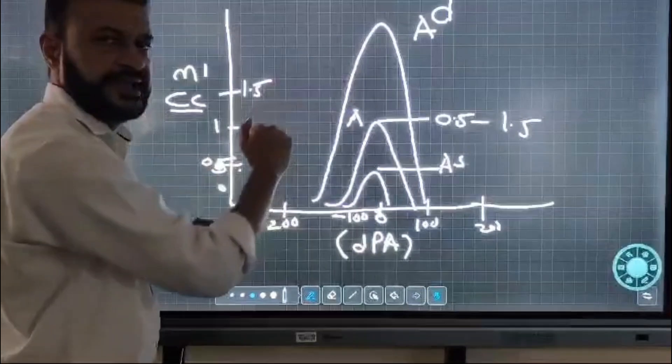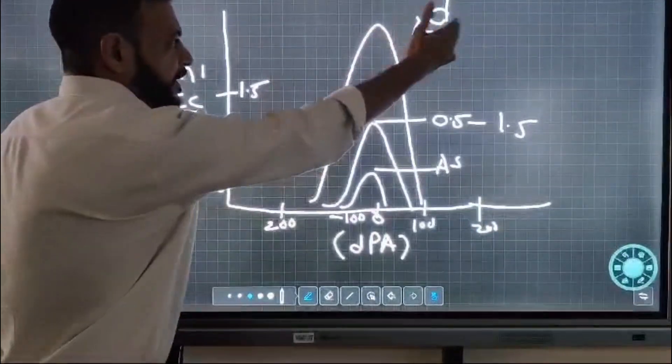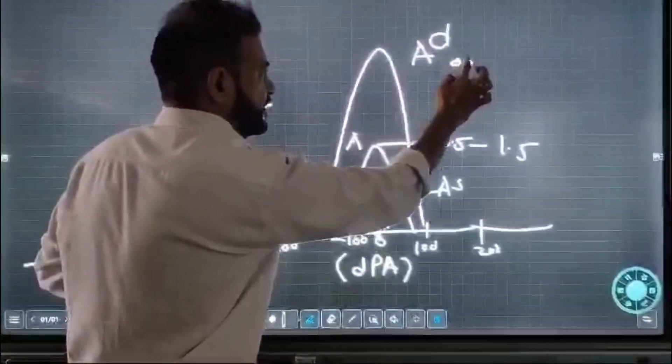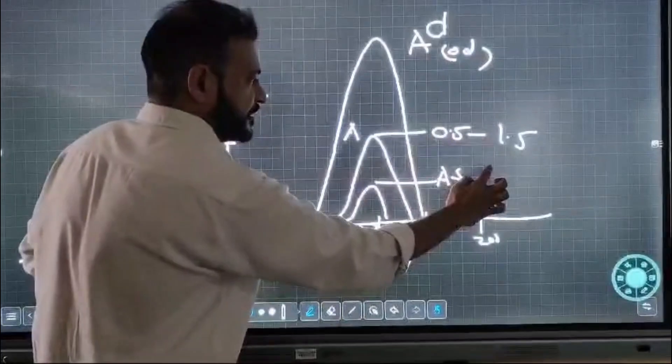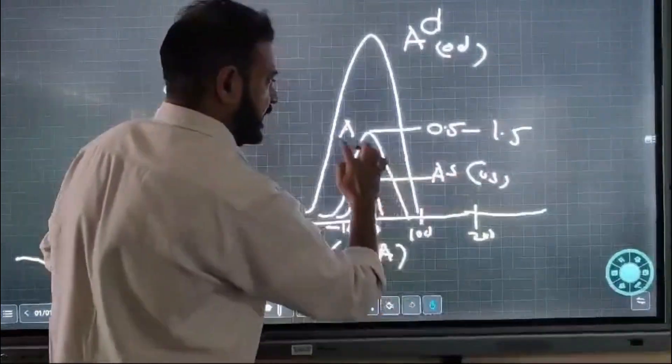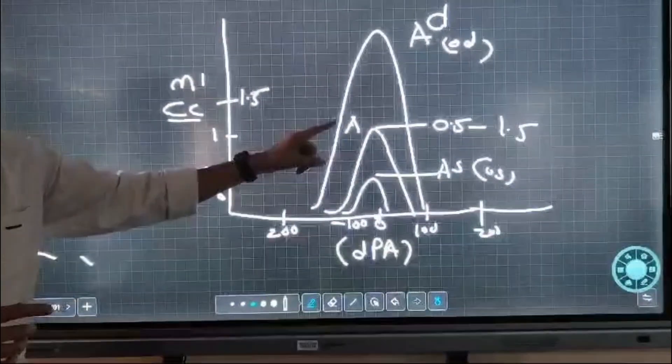At zero pressure with high compliance, it is an Ad curve. Type Ad is seen in ossicular discontinuity. Type As is seen in otosclerosis, and Type A is normal compliance.